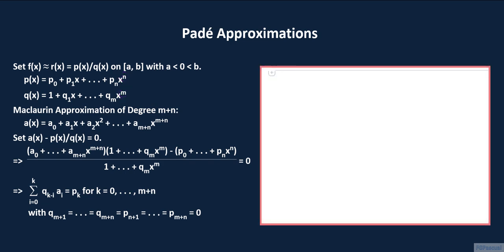For the example, we take f of x to be the arctangent function and evaluate this input line. Then we set the degrees of p and q. Let the degree of p be 5, so n equals 5, and let the degree of q be 5 as well, so that m equals 5. The degree of the Padé approximation is therefore 5 plus 5, or 10.